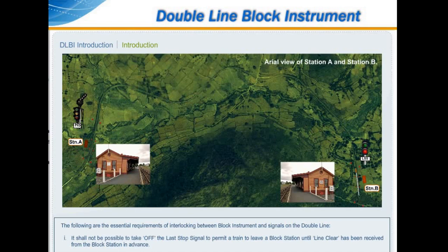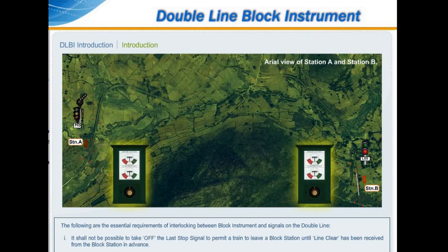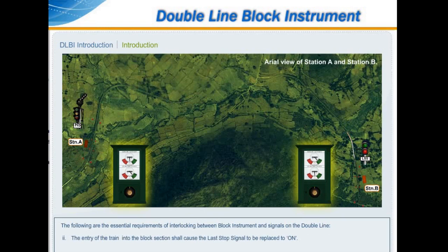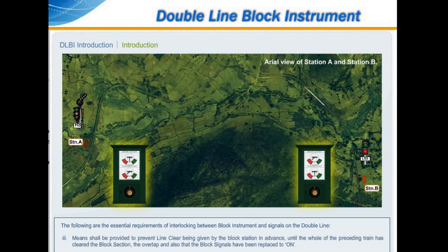It shall not be possible to take off the last stop signal to permit a train to leave a block station until line clear has been received from the block station in advance. The entry of the train into the block section shall cause the last stop signal to be replaced to ON. Means shall be provided to prevent line clear being given by the block station in advance until the whole of the preceding train has cleared the block section, the overlap, and also that the block signals have been replaced to ON.